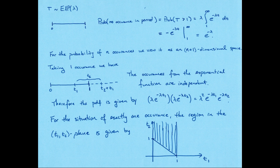Assume we have a random variable t with an exponential distribution with parameter lambda. For one interval going from 0 to 1, the probability of no occurrence in the period equals the probability that t is greater than 1 — that is, the occurrence happens beyond our interval. That gives lambda times the integral from 1 to infinity of e to the negative lambda t dt, which evaluates to e to the negative lambda.